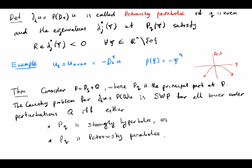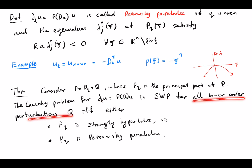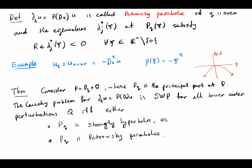The main theorem we will consider today is: with the principal part fixed, the Cauchy problem for this equation is strongly well-posed for all lower order perturbations if and only if either the principal part is strongly hyperbolic or it is Petrovskiy parabolic.